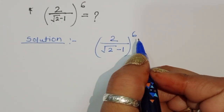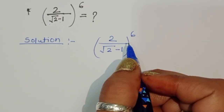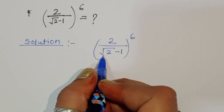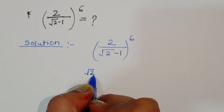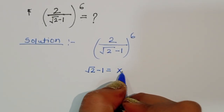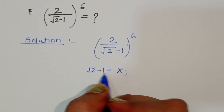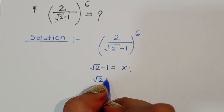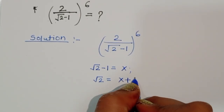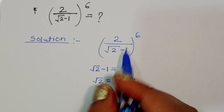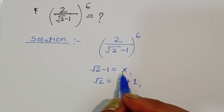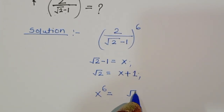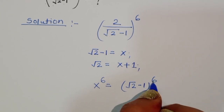So the question is 2 divided by square root of 2 minus 1, to the full power 6. We can do one thing here: let's consider square root of 2 minus 1 equal to x. So we can say square root of 2 is equal to x plus 1. Now x power 6 is equal to square root of 2 minus 1 to the whole power 6.